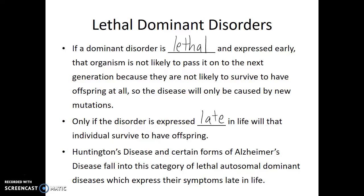Examples of lethal dominant disorders include Huntington's disease and certain forms of Alzheimer's. What's tragic with these situations is that often individuals do not know they have these diseases until later in life. At that point, their children are often taking care of them, and the child now knows that they have a 50-50 chance of also having received this dominant lethal allele from their affected parent.